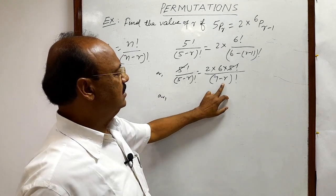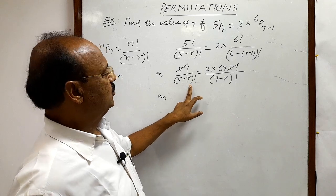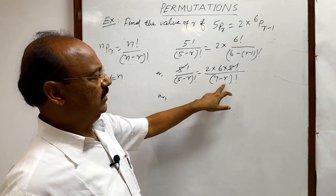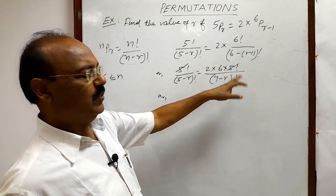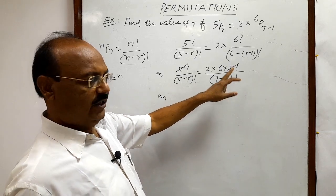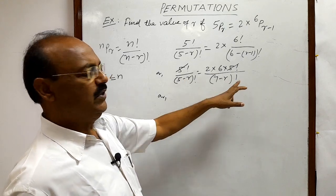Here 7 minus r factorial is a number greater than 5 minus r factorial. So similarly this 7 minus r factorial can also be written as 7 minus r into 6 minus r, decreasing by 1, into 5 minus r whole factorial. So that 5 minus r factorial will be cancelled out.